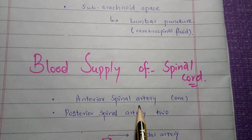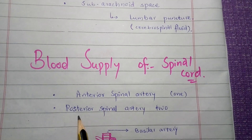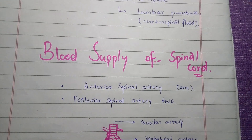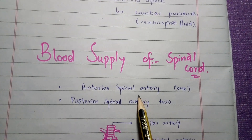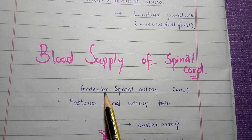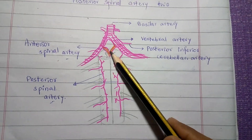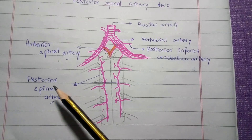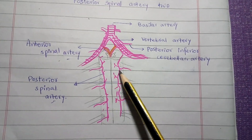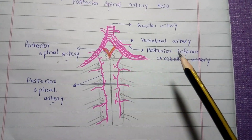The spinal cord receives blood supply from one anterior spinal artery and two posterior spinal arteries. The posterior spinal arteries are two in number, present on either side of the spinal cord, while the anterior spinal artery is present on the anterior side. You can see in the diagram the anterior spinal artery and the two posterior spinal arteries on the posterior side.